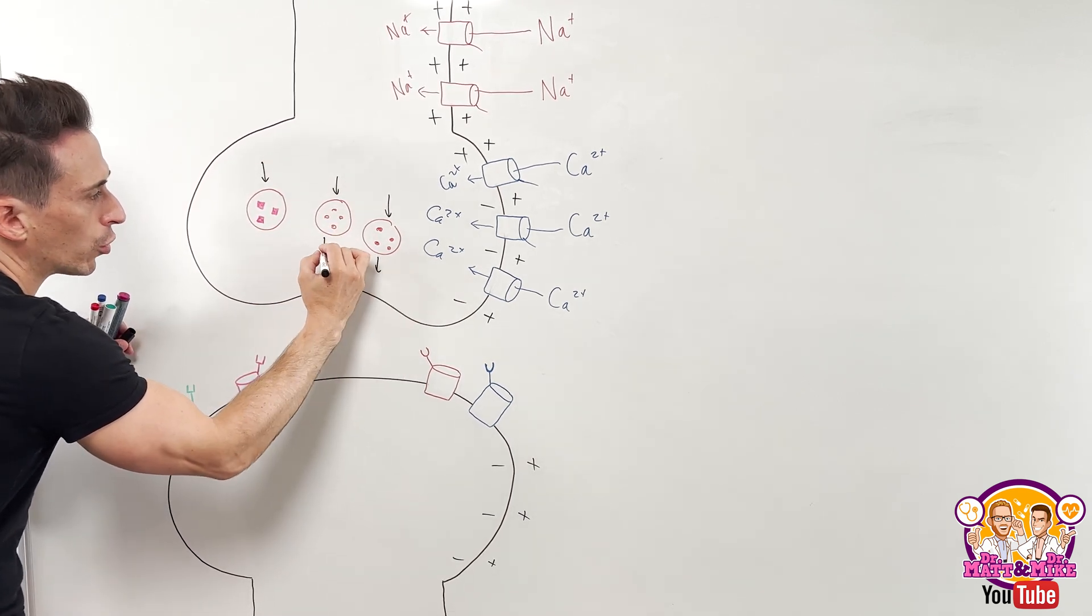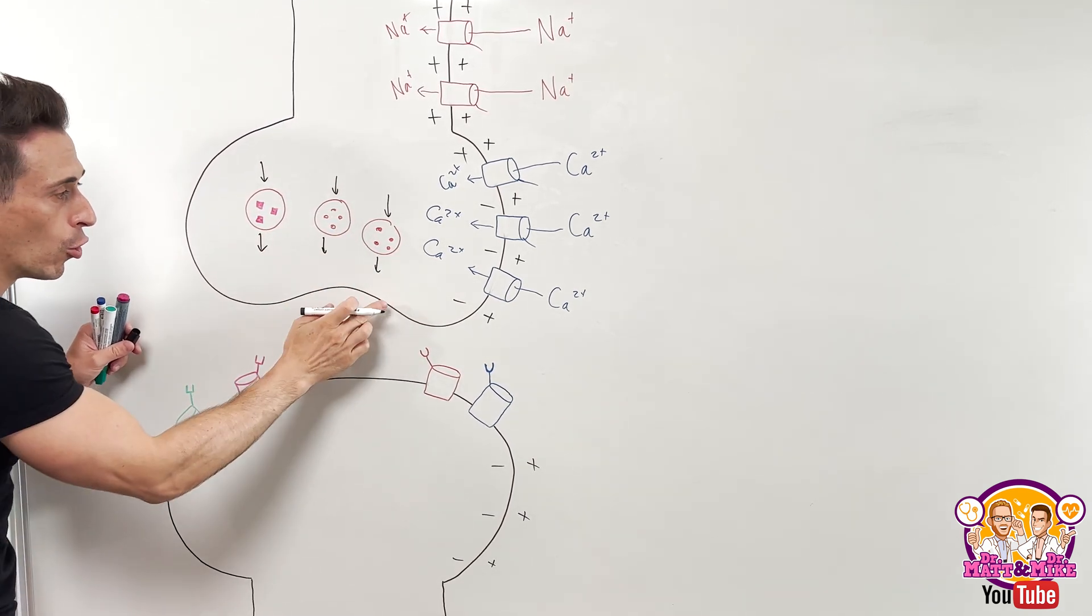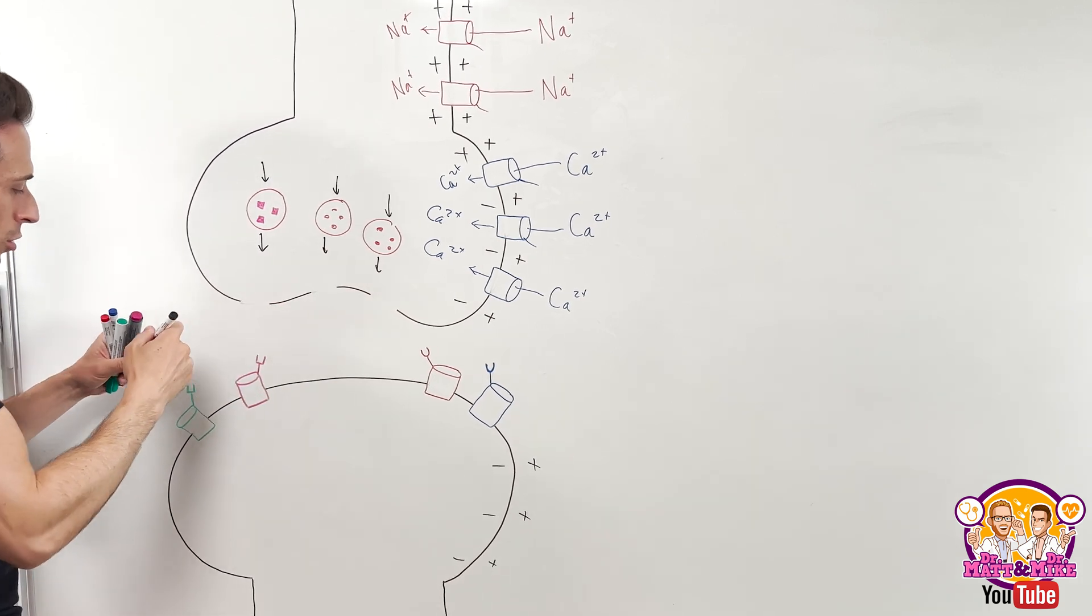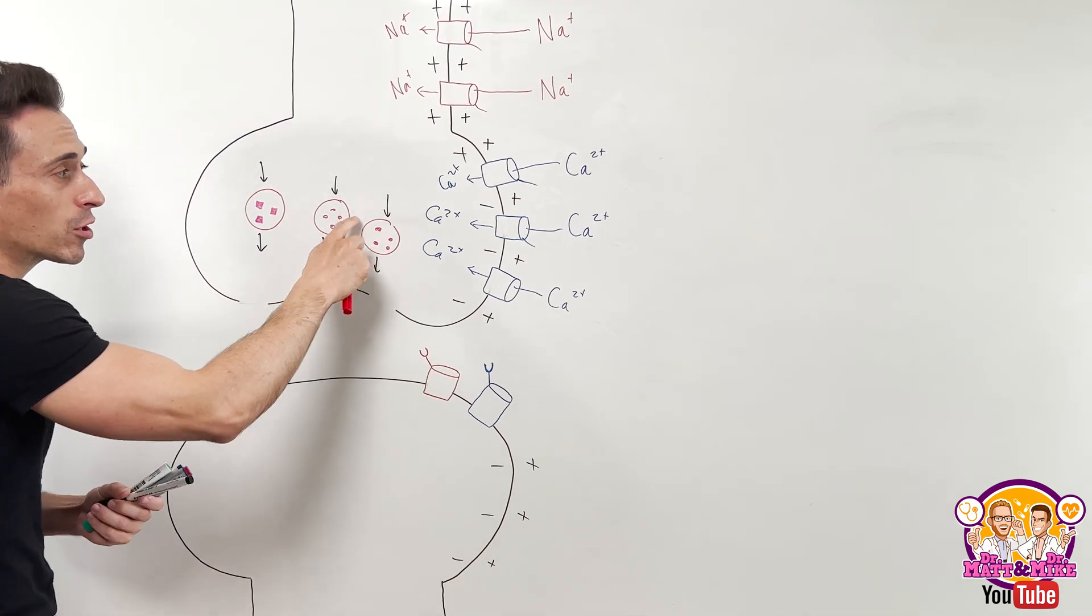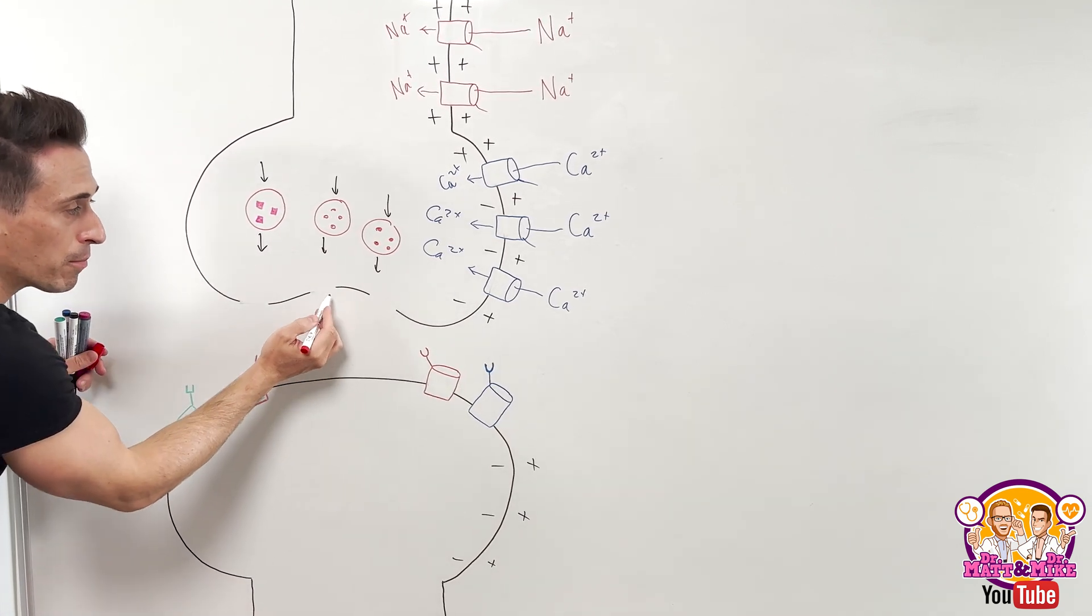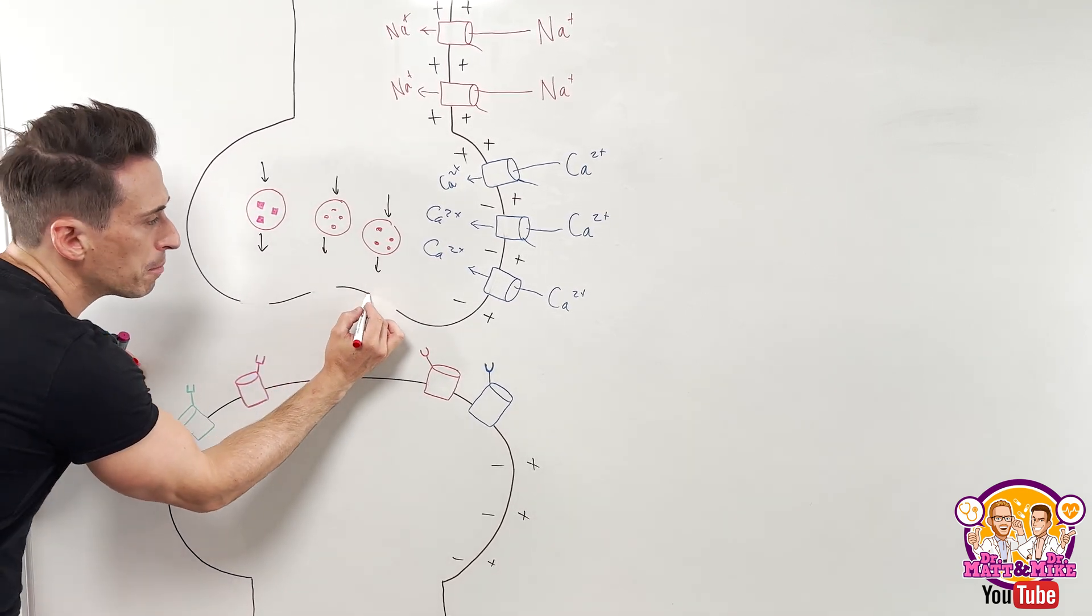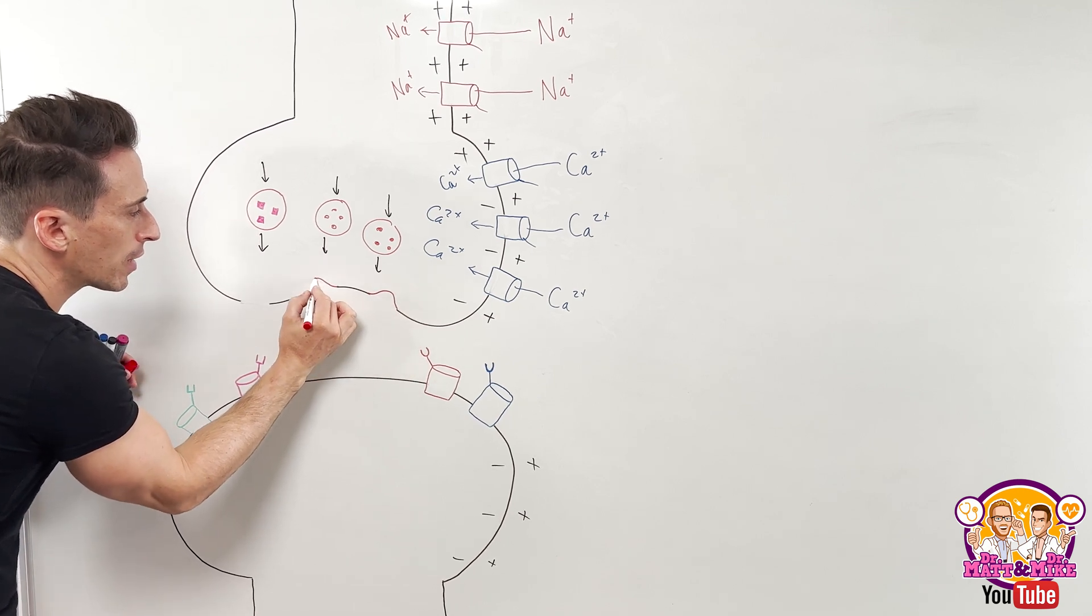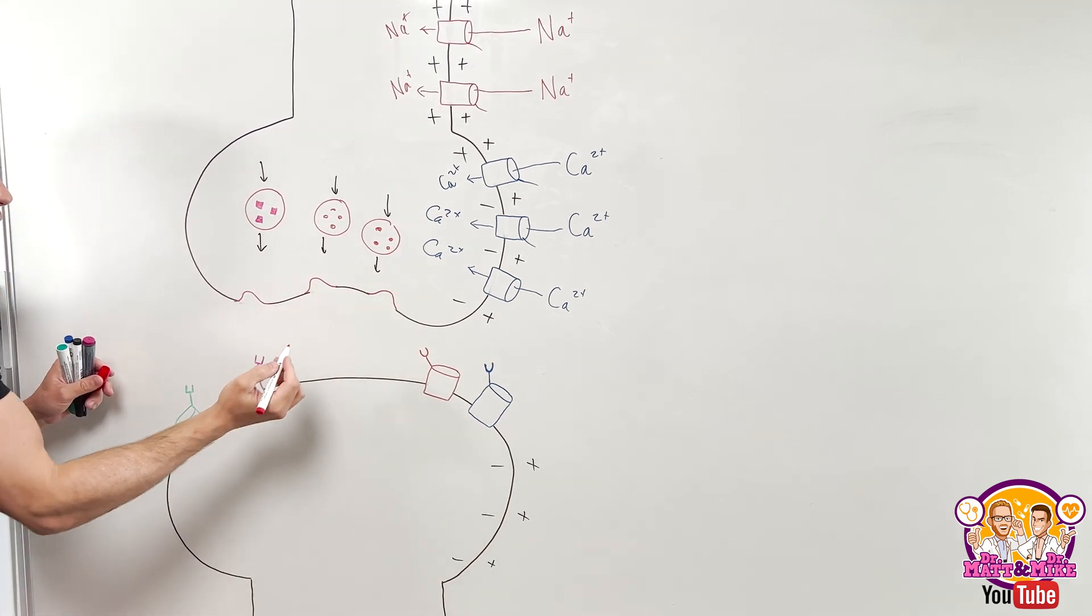What happens is the calcium gives these vesicles a little bit of a push and tells them to start to move their way towards the cell membrane where it tells them to merge with the cell membrane because the vesicles are made up of phospholipids just like the membranes of our cells. And so they merge. And when they merge, they release their substances.